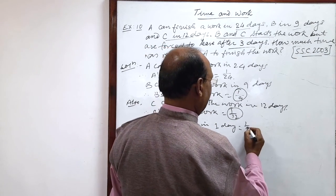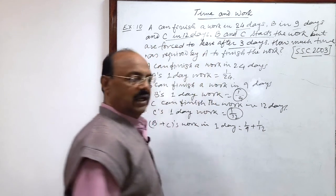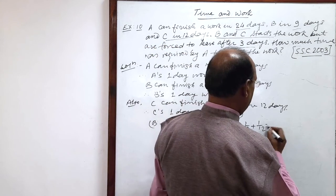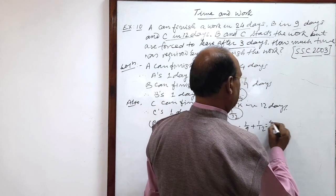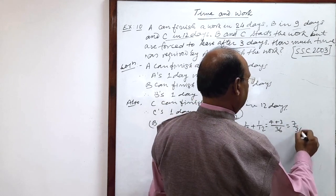So, this is 1 by 9 plus 1 by 12. Simplify it. LCM will be 36. 4 plus 3, this is equal to 7 by 36.